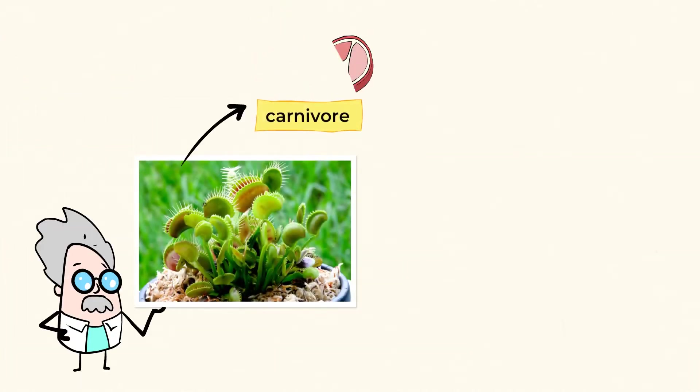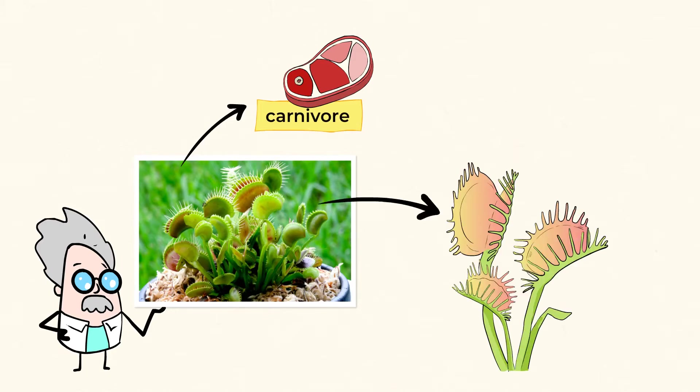There are even plants that are carnivores. This is a very unique type of carnivore. It's a trapping plant called the Venus flytrap. Imagine that, a plant that eats insects. So cool.